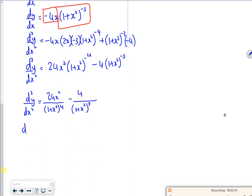I can make this have a common denominator of 1 plus x² to the power of 4 just by multiplying this by 1 plus x² over 1 plus x². The first term is fine because it's all over 1 plus x² to the power of 4, so that's 24x². But the second term needs 1 plus x² multiplied out, so it's minus 4 lots of 1 plus x².